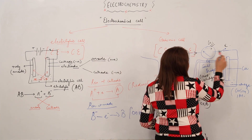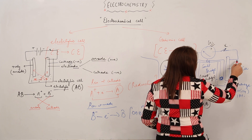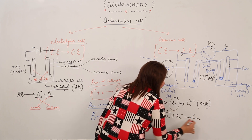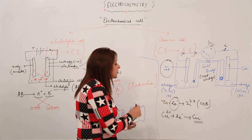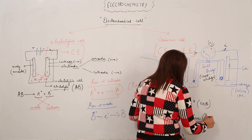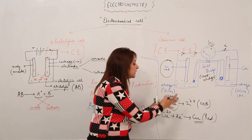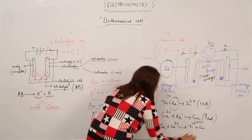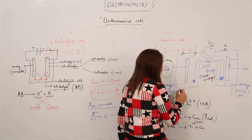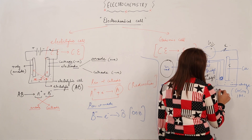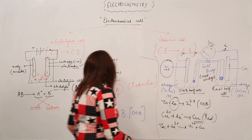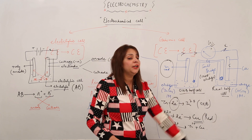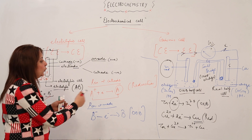The electrons travel through the wire and reach the copper electrode. Copper has the tendency to get reduced, so it gains two electrons and forms copper atoms. So overall, the net reaction is: Zn + Cu²⁺ → Zn²⁺ + Cu. The half-cell in which oxidation occurs is called the oxidation half-cell, and the one in which reduction occurs is called the reduction half-cell. Unlike the electrolytic cell with one beaker where both reactions occur together, the galvanic cell has separate beakers for oxidation and reduction.